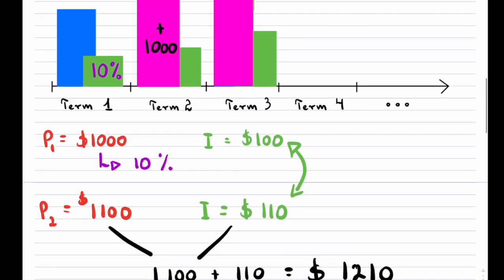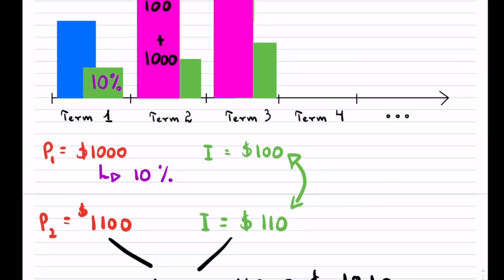And we can continue this process for term three, term four, and so on. And as you can slowly see, the interest is going to outgrow your principal in the long term. And that is what's going to make you money, or if you borrowed, it's going to make the bank money.